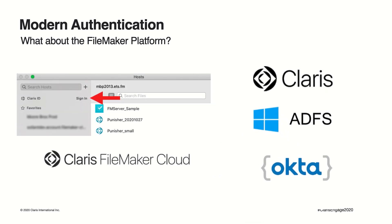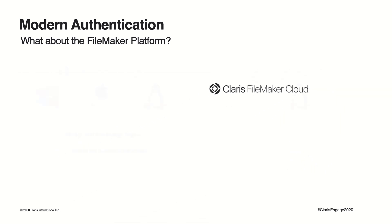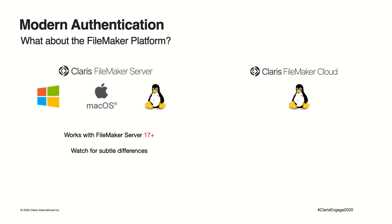When a file is hosted by Claris FileMaker Cloud, you can use identity providers such as Claris ID (based on AWS Cognito), Active Directory Federated Services, and Okta — all three completely supported. Because there are four different FileMaker server options today — FileMaker Cloud and three on-premise versions (Windows, macOS, and Linux) — it pays to be watchful for functional differences between them. The ability to use any OpenID Connect-compatible identity provider applies to any on-premise FileMaker server since FileMaker Server 17.